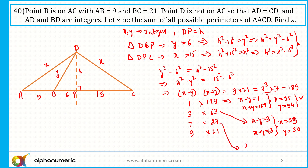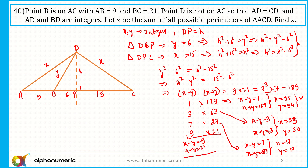Case 3 — X minus Y equals 7, X plus Y equals 27; adding gives 34, so X equals 17 and Y equals 10. Case 4 — X minus Y equals 9, X plus Y equals 21; adding gives 30, so X equals 15 and Y equals 6. But X must be strictly greater than 15 and Y strictly greater than 6, so the fourth case is not valid.